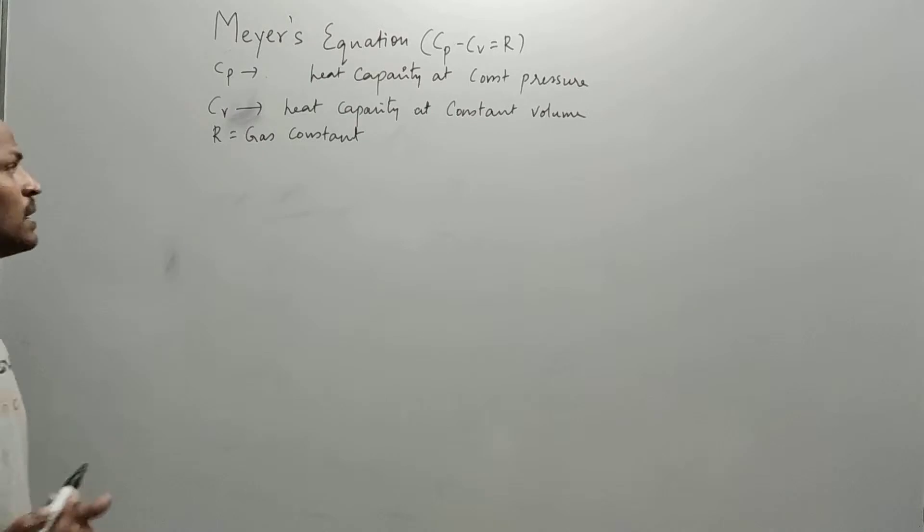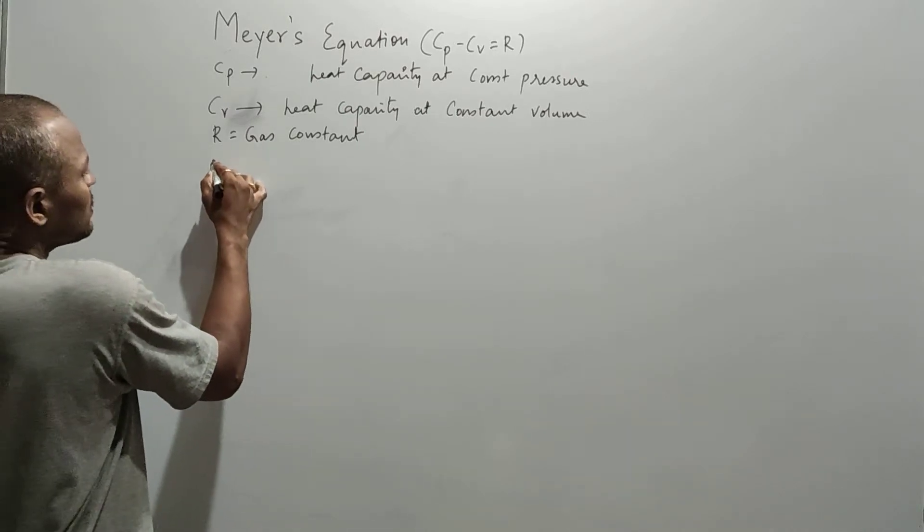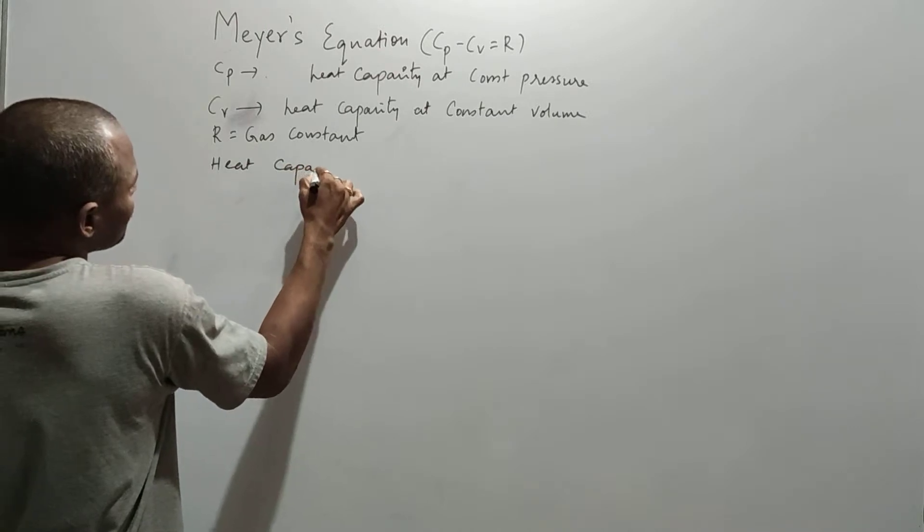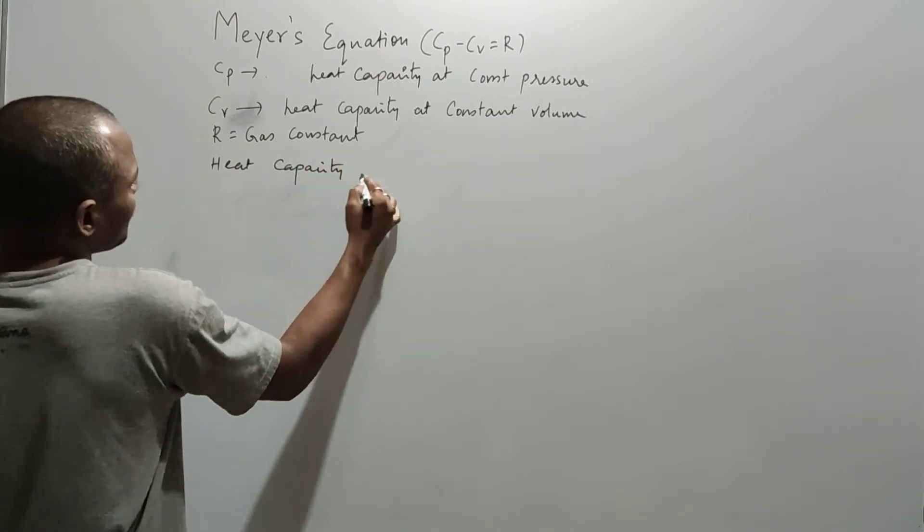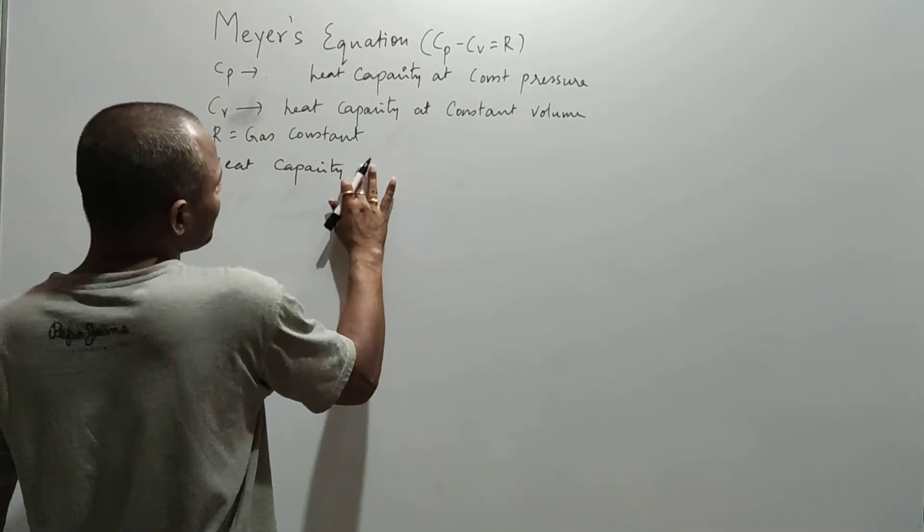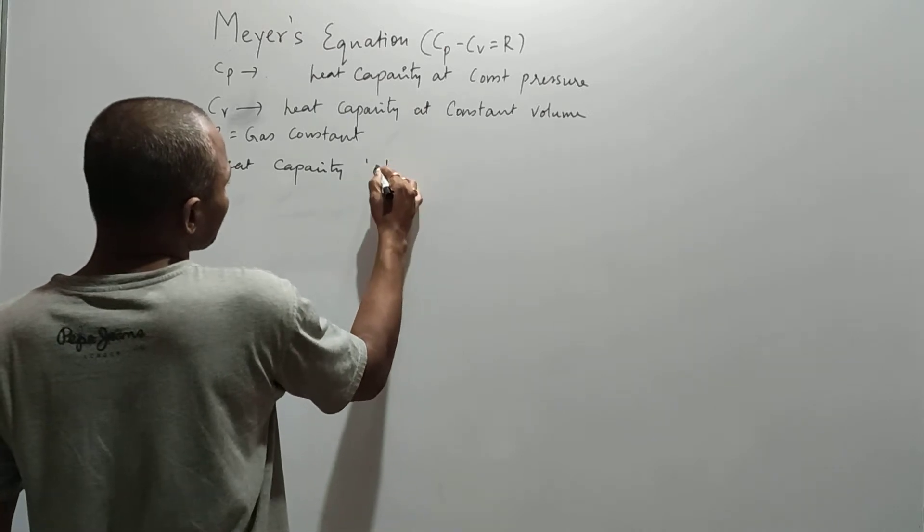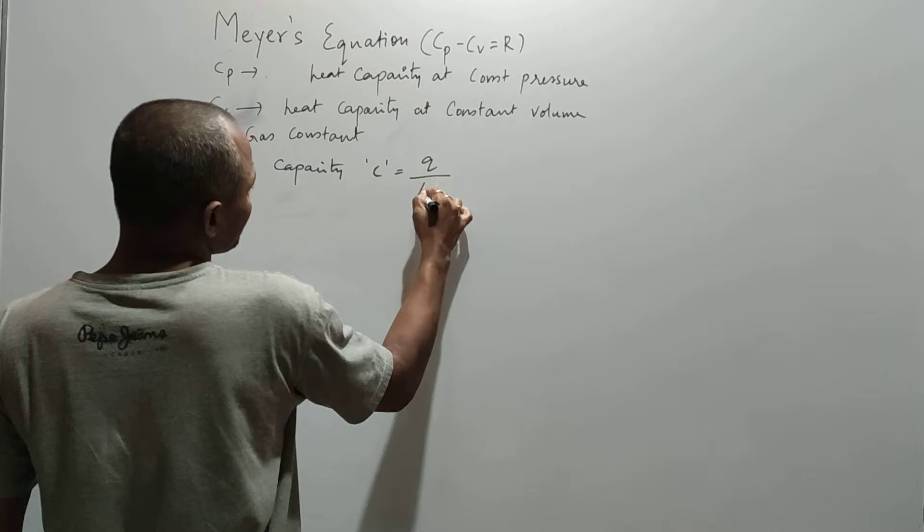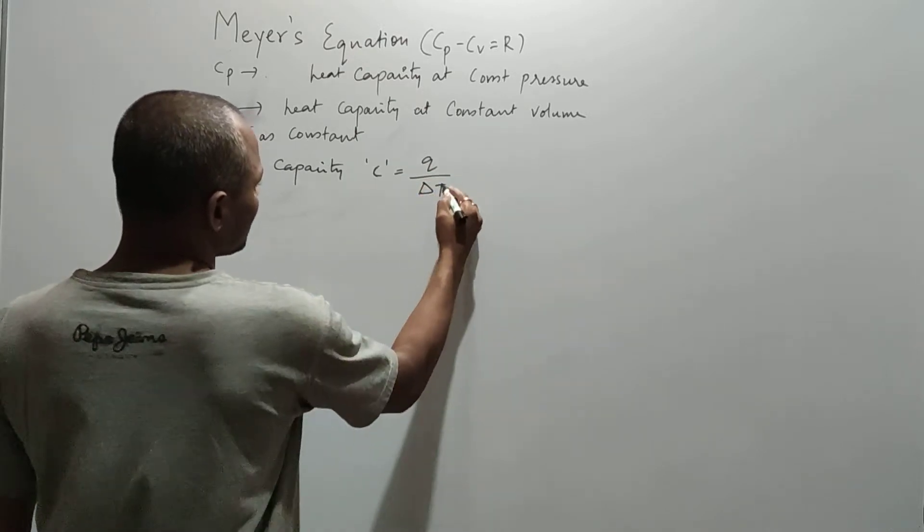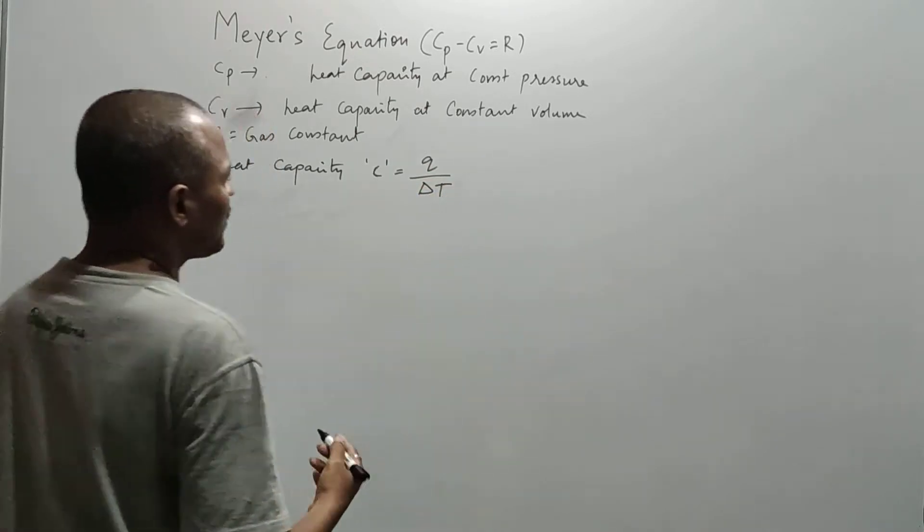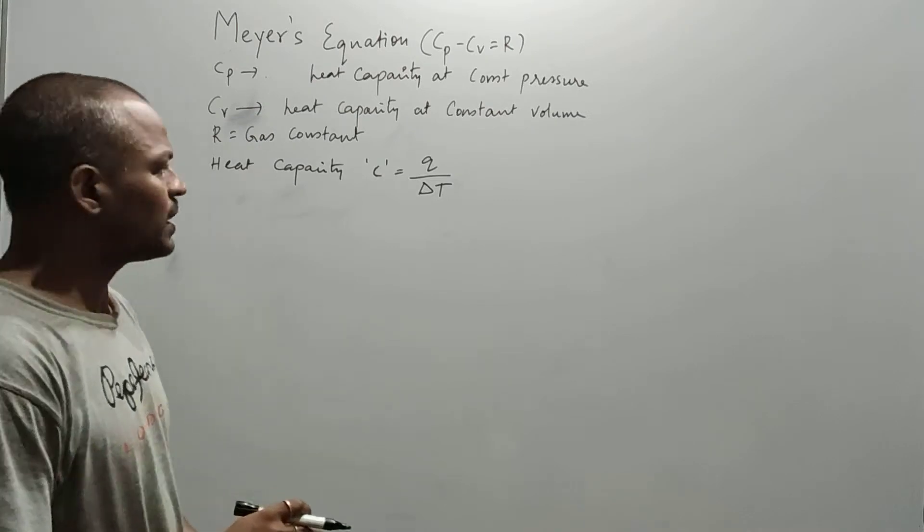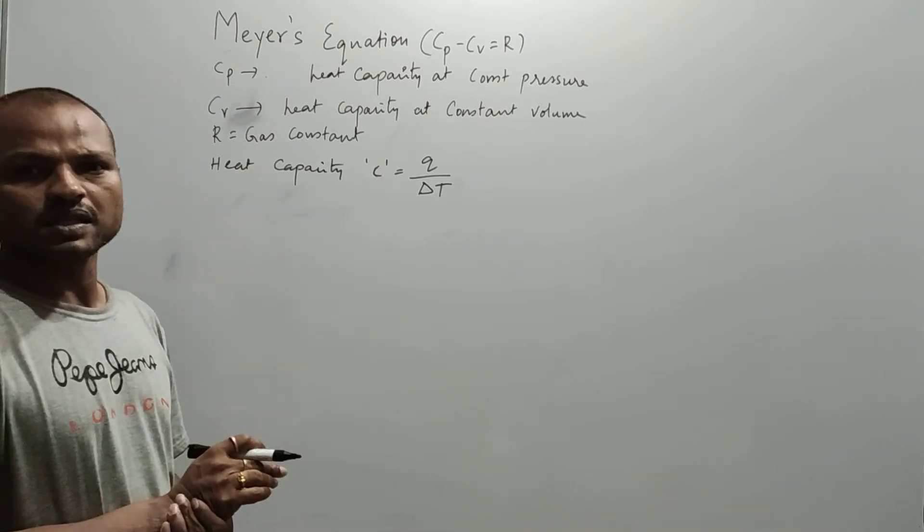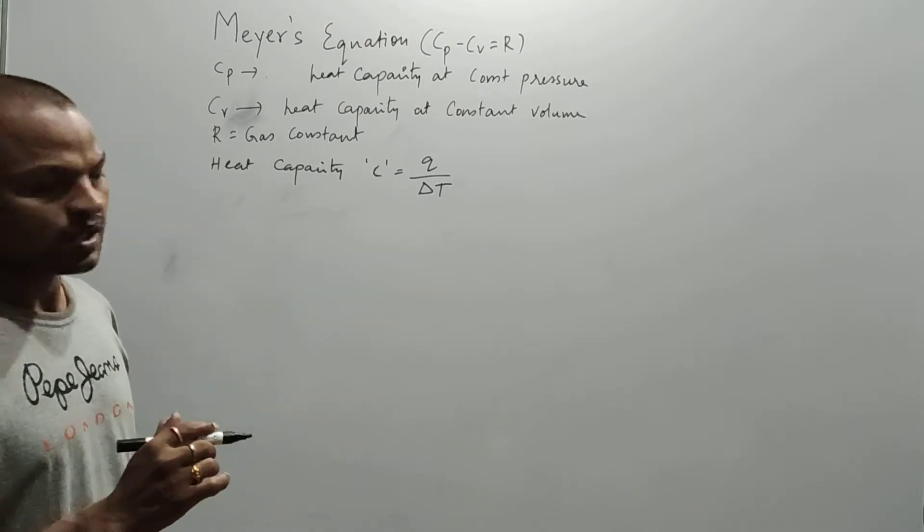We know that the heat capacity definition or formula is nothing but C equals Q by del T. It indicates raising the heat of one mole of the substance by one degree Celsius.